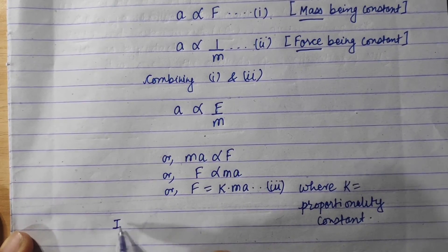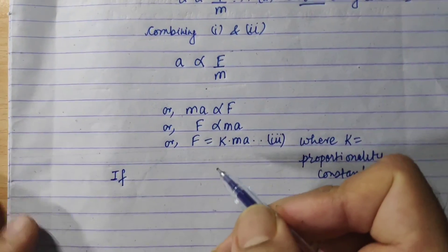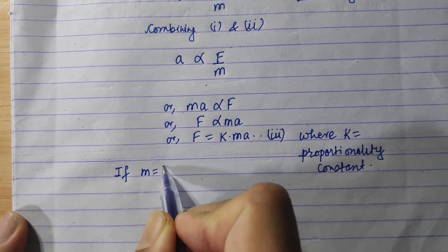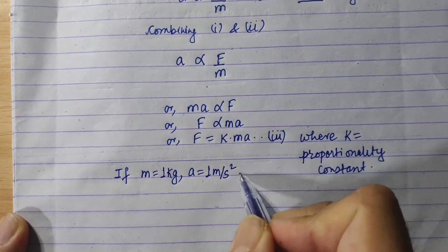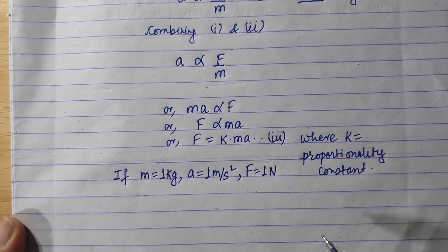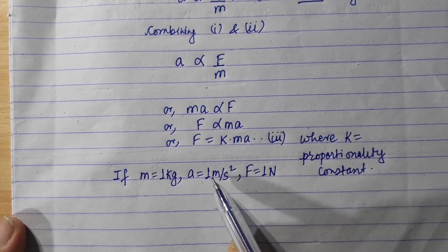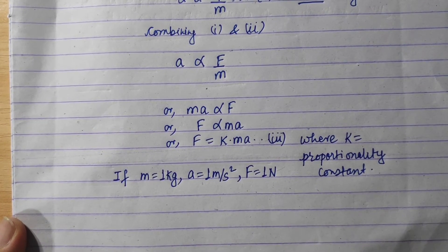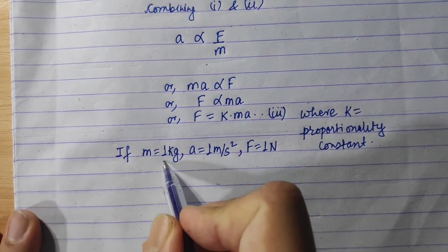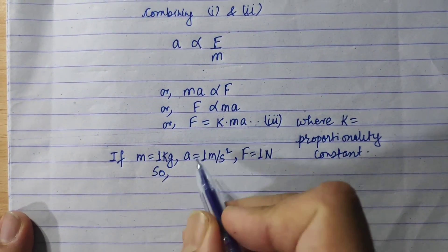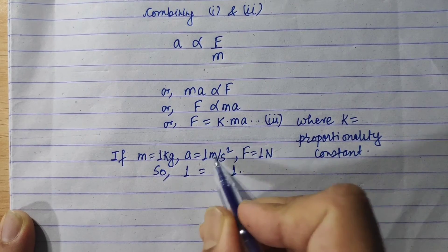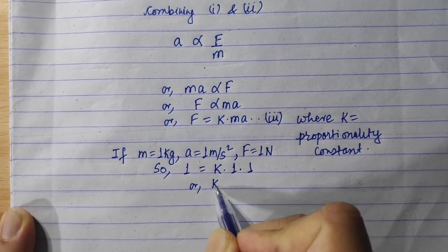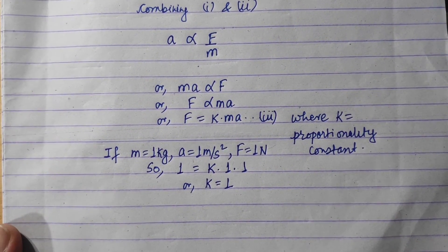By definition of force, if mass equals 1 kg and acceleration equals 1 metre per second squared, then the force is 1 Newton. Using the definition of 1 Newton force and substituting these values, we get 1 equals 1 times k times 1, which simplifies to k equals 1.